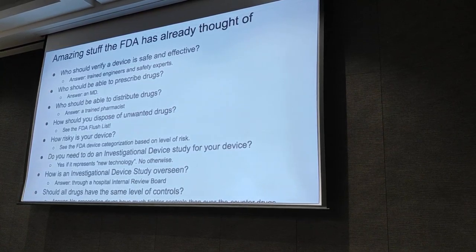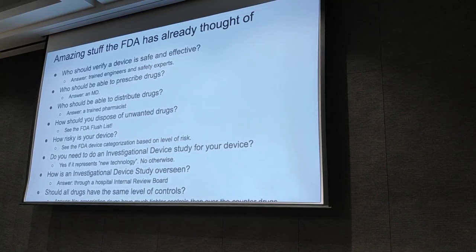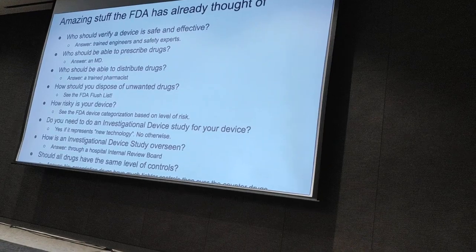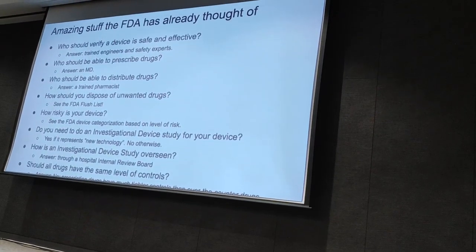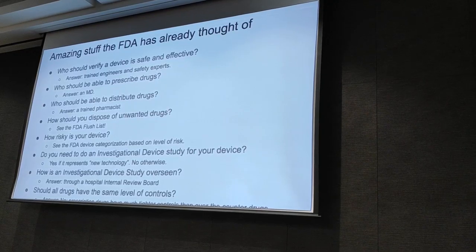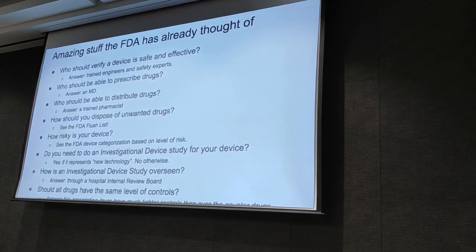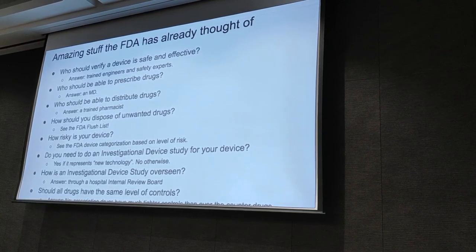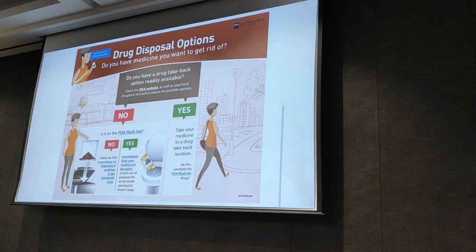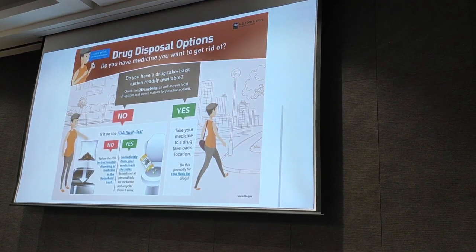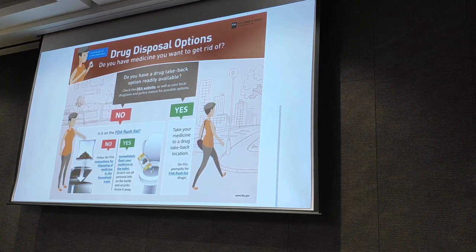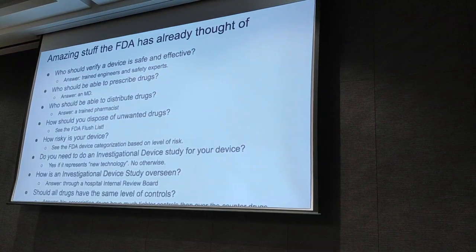Who should be able to distribute drugs? Imagine going back 100 years and saying, before you can have a drug, you need a trained person to pick it up from this box and put it in that box. That's basically what a pharmacist is. They're actually highly trained to properly distribute and manage drugs in terms of keeping them safe, at the right temperature, and giving people instructions. How should you dispose of unwanted drugs? They literally have a list of all the drugs that you can flush down the toilet or not — the FDA flush list. That just shows you how far these things go.